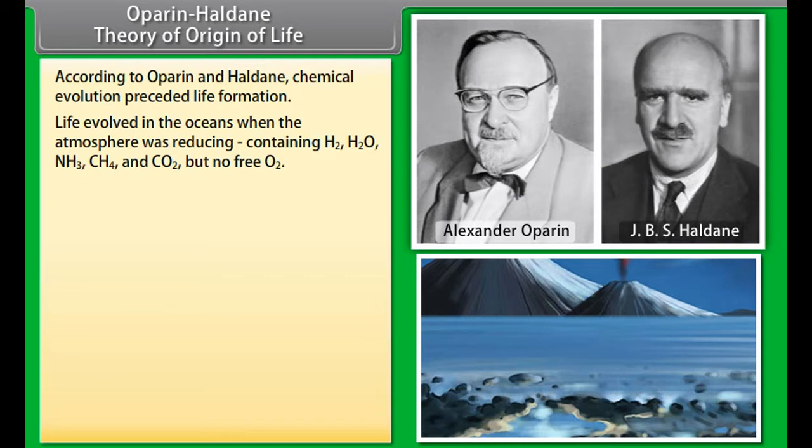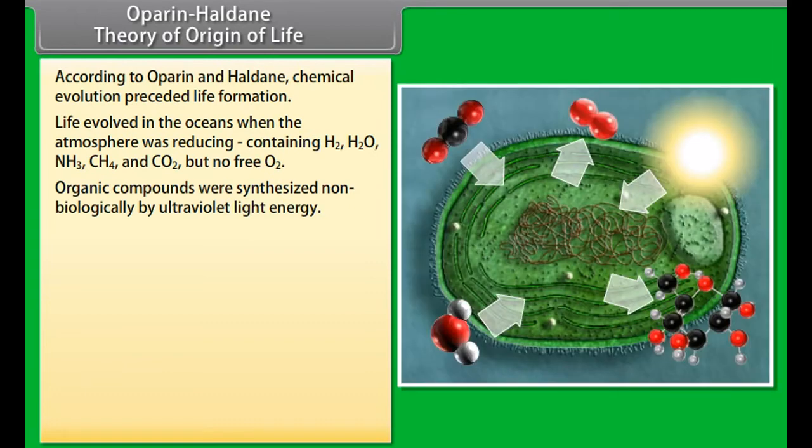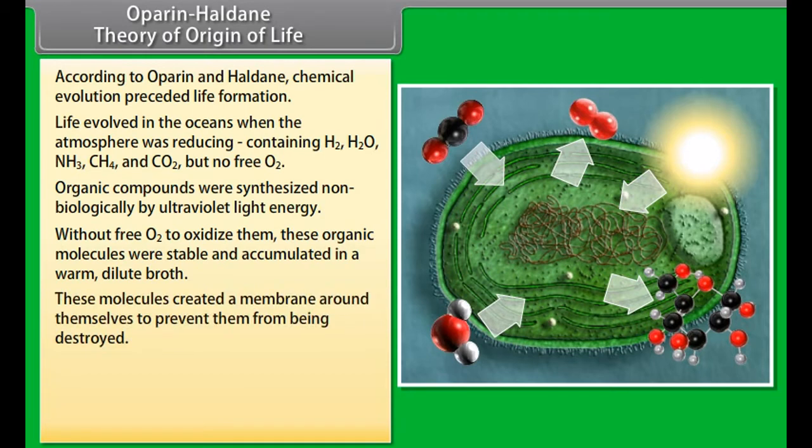According to Oparin and Haldane, chemical evolution preceded life formation. Life evolved in the oceans when the atmosphere was reducing, containing H2, H2O, NH3, CH4 and CO2 but no free O2. Organic compounds were synthesized non-biologically by ultraviolet light energy. Without free O2 to oxidize them, these organic molecules were stable and accumulated in a warm dilute broth.